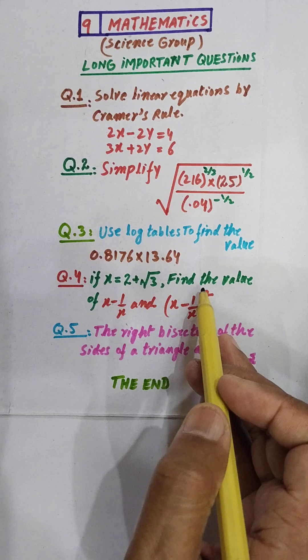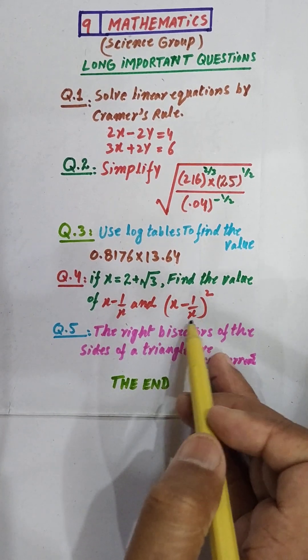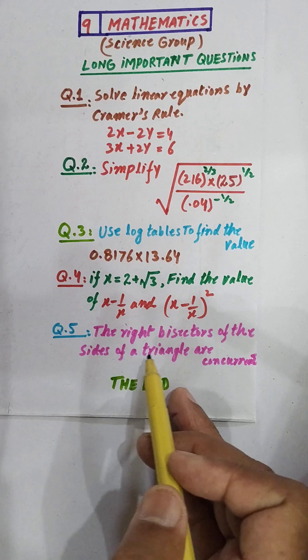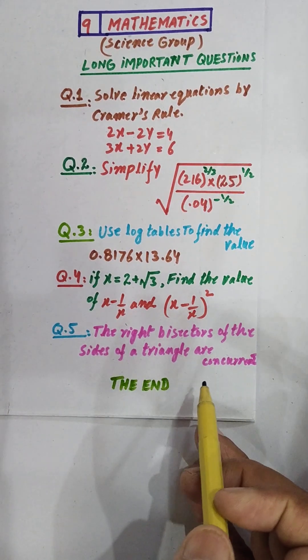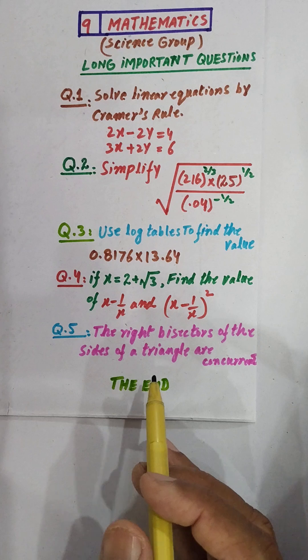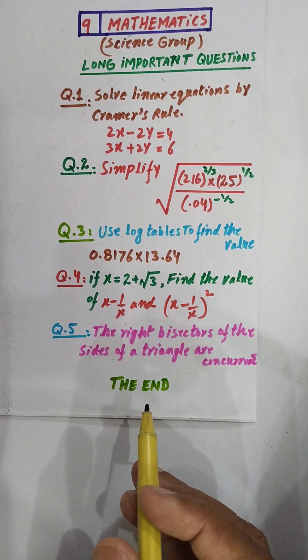x minus 1 over x, and x minus 1 over x whole square. Question 5: The right bisectors of the sides of a triangle are concurrent. I hope you liked my video. Goodbye.